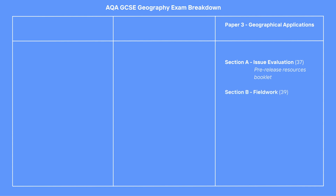Section B is about fieldwork. Here you will be asked about fieldwork in general, and your own fieldwork in particular. 39 marks are available in total in this section. There is another question with 3 spelling, punctuation and grammar marks. Like Papers 1 and 2, this exam is also 90 minutes long. But with just 76 marks available, you have slightly more time available per mark.